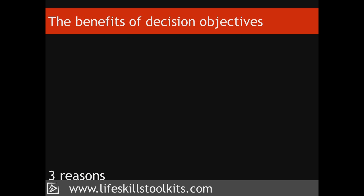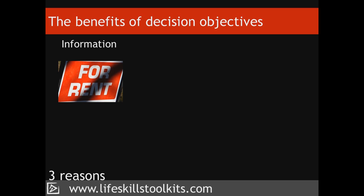Here are three great reasons for defining your decision objectives. The first is that they help you to determine the information you require to make your decision. For instance, while deciding whether to rent out a room in your house, you realise that you want the house to yourself during the weekends. Armed with this objective, you Google weekday lodgers to find out whether such tenants exist.